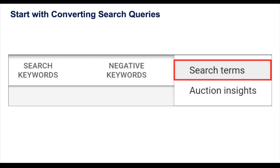I'm going to show you a few of my favorite custom intent audiences to create for YouTube campaigns. First, consider going after converting search queries. If you have great performing search campaigns and a list of search terms that have converted in the past, export those converting search queries and create an audience for them, so you can reach potentially new users who are also looking for these specific products or services.